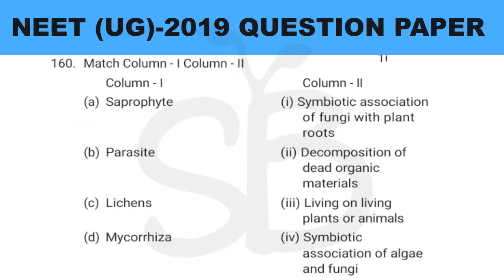Question number 160: match column 1 with column 2. Option A: saprophytes. Saprophytes are dependent on dead and decaying organic matters. They are also decomposers — decomposition of dead organic materials. Option B: parasites. Parasites depend on living organisms for food. They live on living plants or animals.